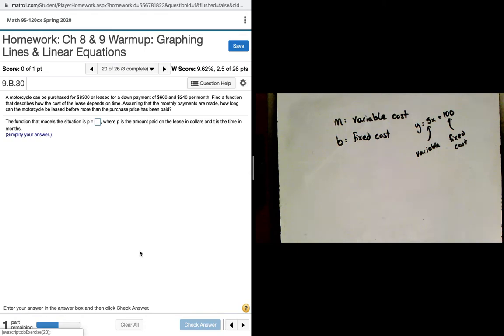This is really useful for problems like 20 and 21. I'm actually going to go through 20 in its entirety and leave 21 to you. It says a motorcycle can be purchased for $8,300 or leased for a down payment of $600 and $240 a month. So, there's a lot of numbers in there, so we need to just parse some of this out. It says find a function that describes how the cost of the lease depends on time. Assuming the monthly payments are made, how long can the motorcycle be leased before the purchase price has been paid? So, the purchase price is the $8,300. We're going to leave that aside.